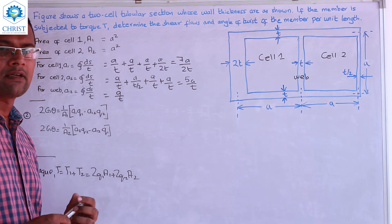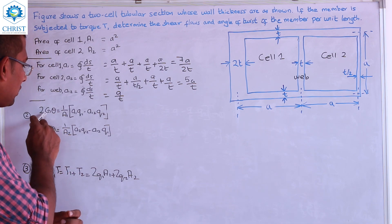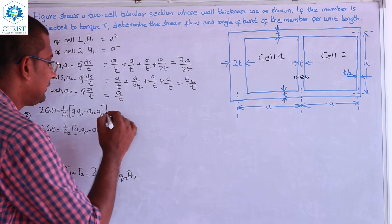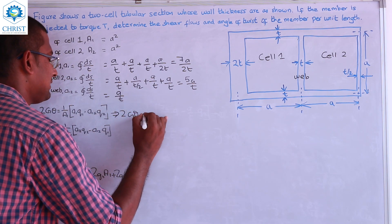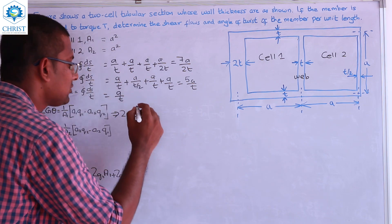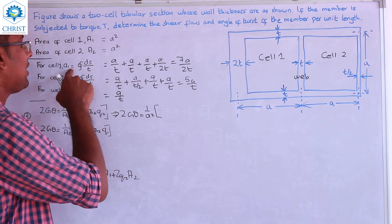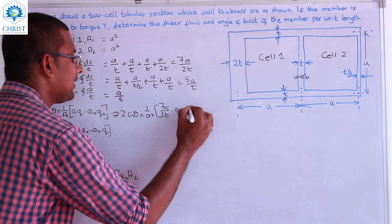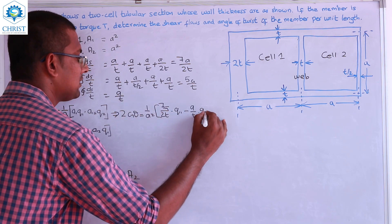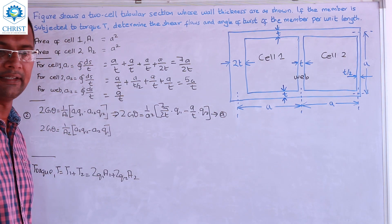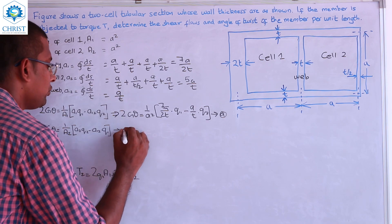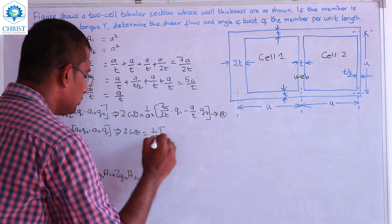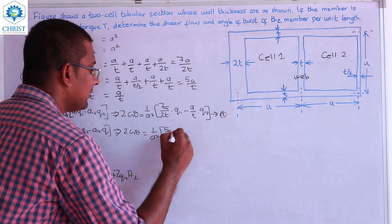Now we set up the two compatibility expressions. Expression A: 2Gθ = (1/A1_area) × [A1 × Q1 − A12 × Q2], where A1_area = A², A1 = 7a/2t, and A12 = a/t. Expression B: 2Gθ = (1/A2_area) × [A2 × Q2 − A12 × Q1], where A2_area = A² and A2 = 5a/t.